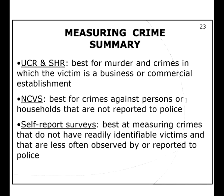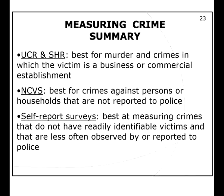The UCR and the SHR are really best for murder and crimes where the victim is a business or commercial establishment, because those tend to get reported to the police. Murder has a dead body that gets reported; businesses report because they want to collect insurance money — that's also why automobile thefts are highly reported. The NCVS is good for crimes against persons, but won't work for victimless crimes. Self-reports are useful but rely on people's memory.